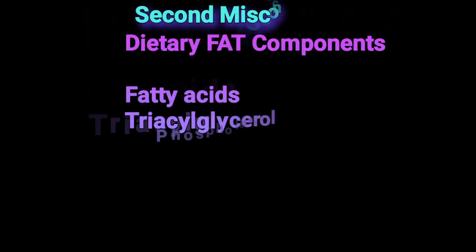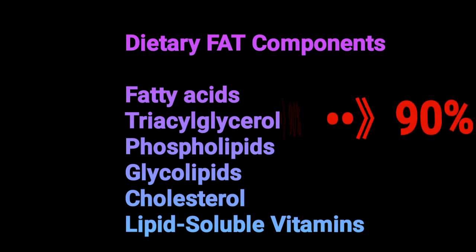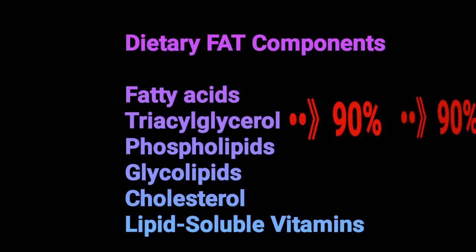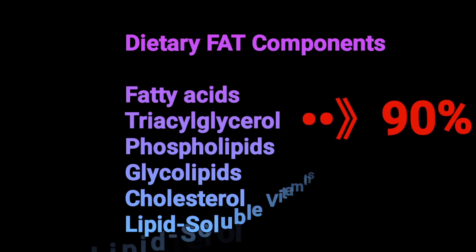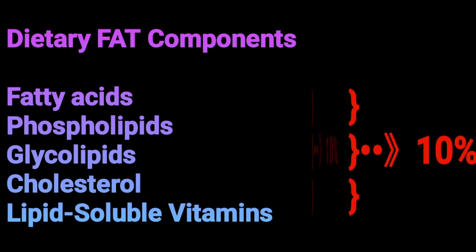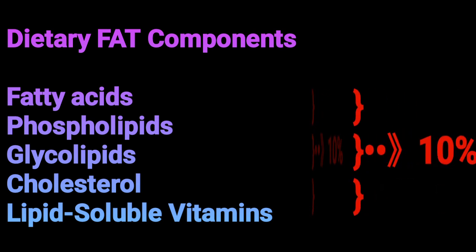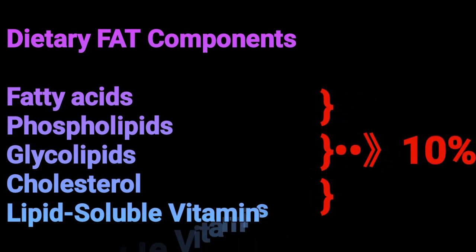Misconception number two has to do with the components of dietary fats. The major component of dietary fats — almost 90% of our dietary fat intake — is in the form of triglyceride or triacylglyceride. The remaining 10% includes all the other lipid classes: fatty acids, phospholipids, cholesterol, glycolipids, lipid vitamins, and so on. So in fact, the major dietary intake is in the form of triacylglycerol or triglyceride.